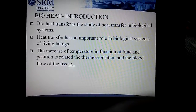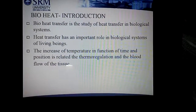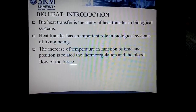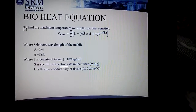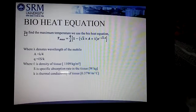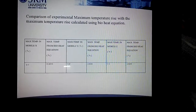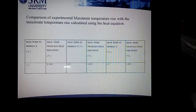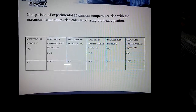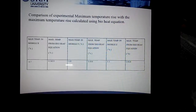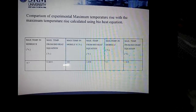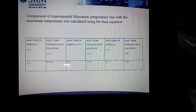Bioheat transfer is the study of heat transfer in biological systems. The electromagnetic radiation emitted from the mobile phone induces a heating effect which causes heating of the blood. We find the maximum temperature rise using the bioheat equation, calculated from the following formula. This tabulation compares the experimental maximum temperature rise with the maximum temperature rise calculated using the bioheat equation. The maximum temperature for mobile X is 0.7 degrees, which is slightly higher than the value calculated from the bioheat equation, whereas for mobile Y and Z, the temperature is less than the maximum temperature from the bioheat equation — the theoretical value is greater than the practical value.